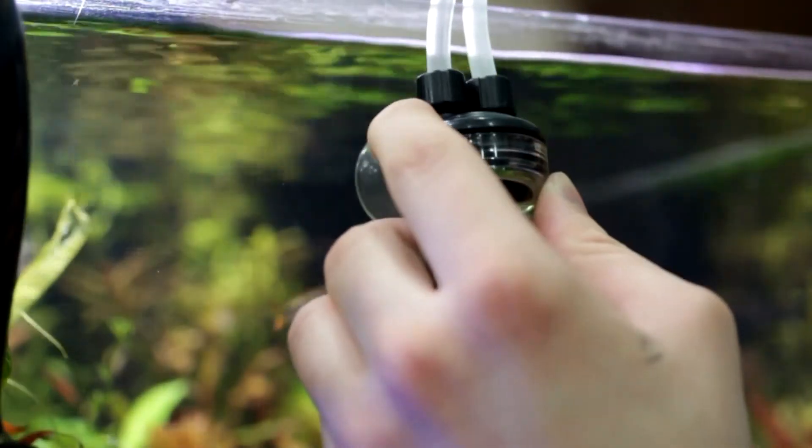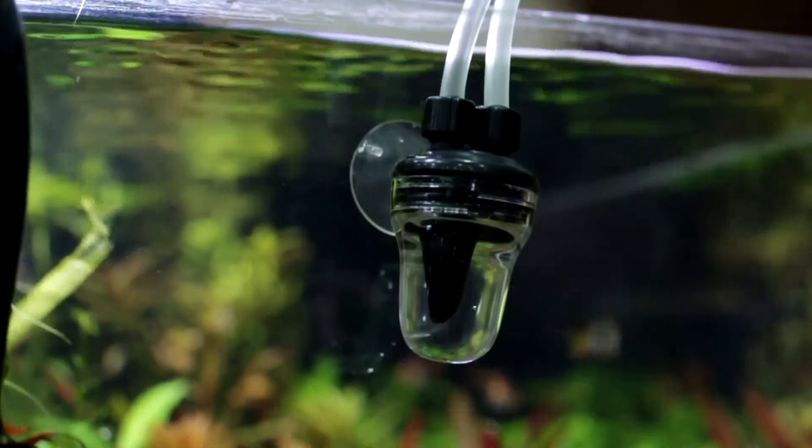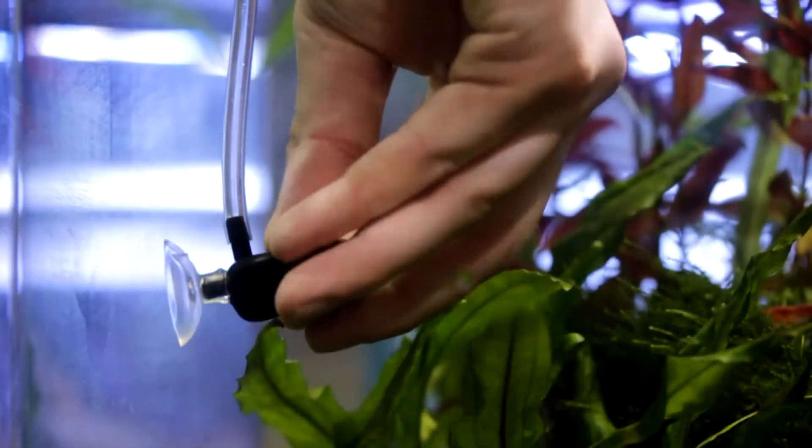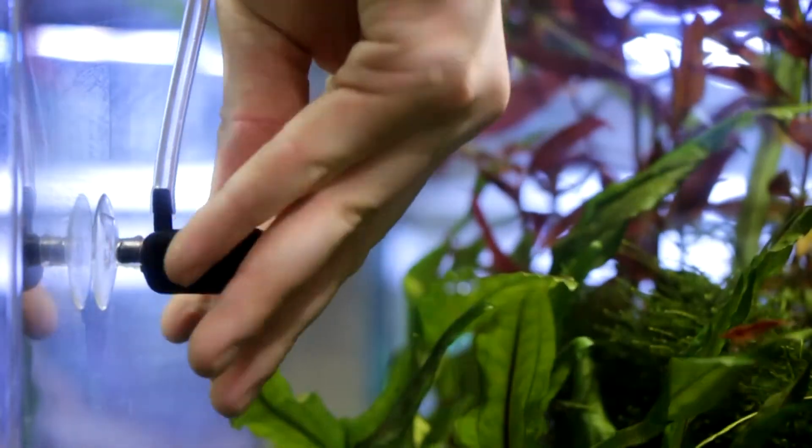Next, attach the bubble counter. This can be used either inside or outside of the aquarium. For the purpose of this video, we'll put it on the outside of the aquarium. Last, put the CO2 diffuser inside the aquarium.